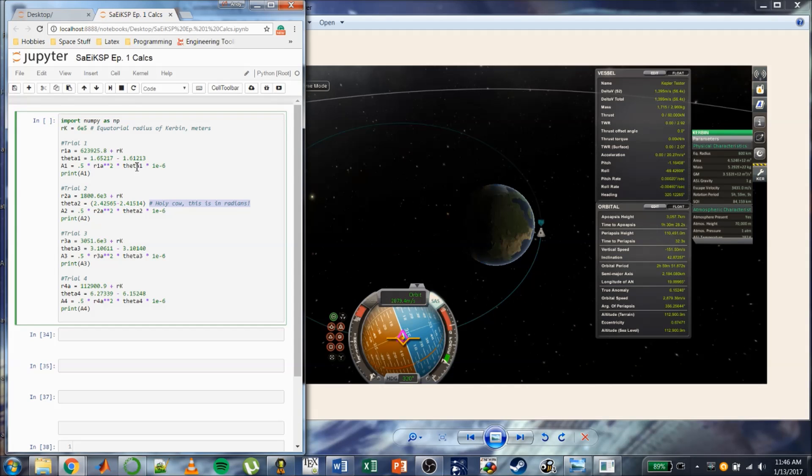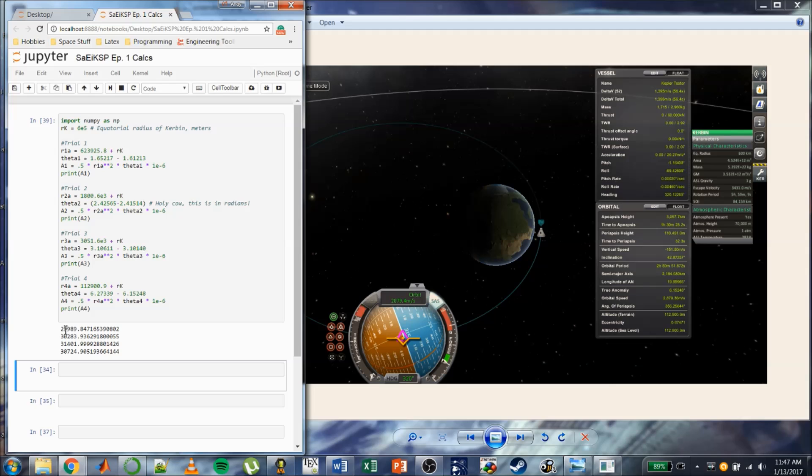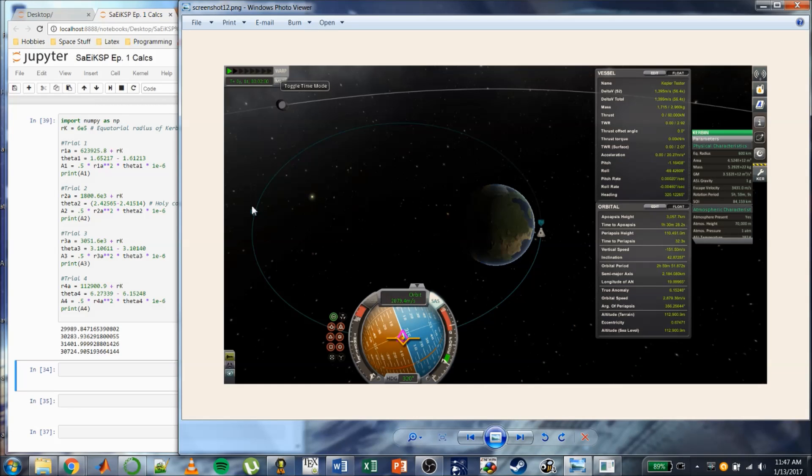So, once I found the angle I just did the simple formula one half times the radius squared times the change in angle. And to make everything simpler I divided through by a million. So, instead of square meters we're going to get our answers in square kilometers. I have everything set out to print so let's take a look. And yeah, you can see that in every case we swept out about 30,000 square kilometers. So, yeah, Kepler's second law does apply.